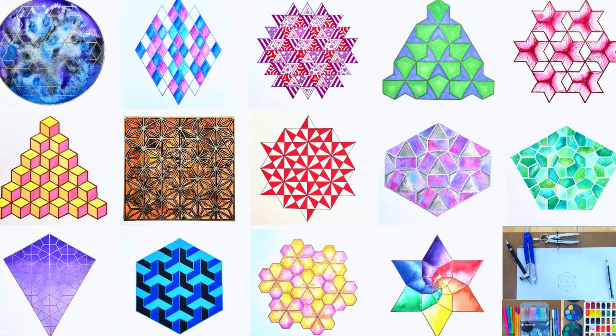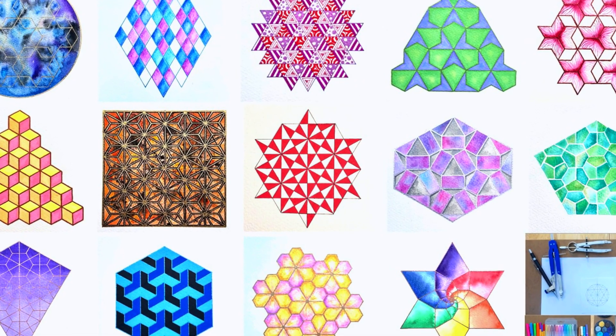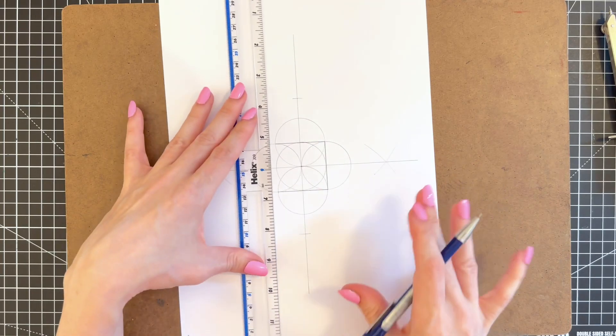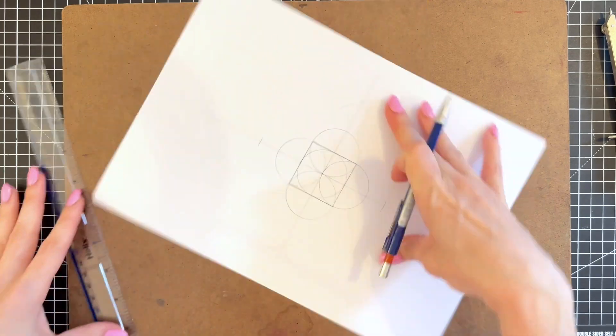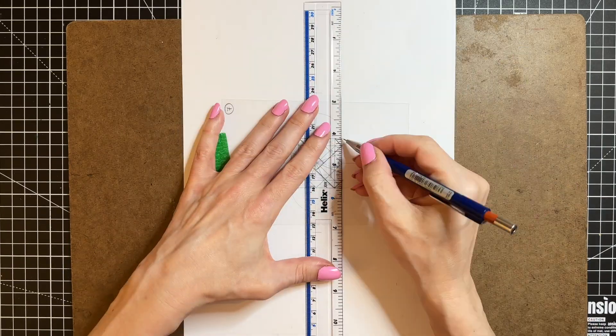This is a follow-up to my 14 hexagon tile course. I will teach you how to construct a simple square grid using a compass and how to split it in a variety of shapes.